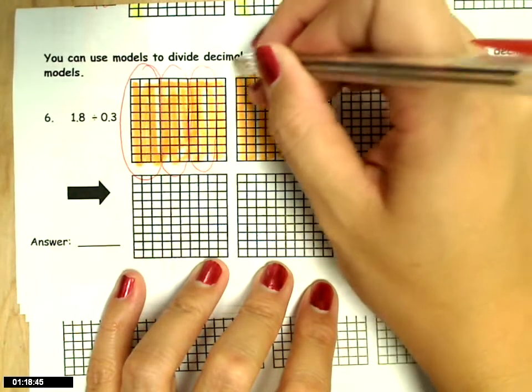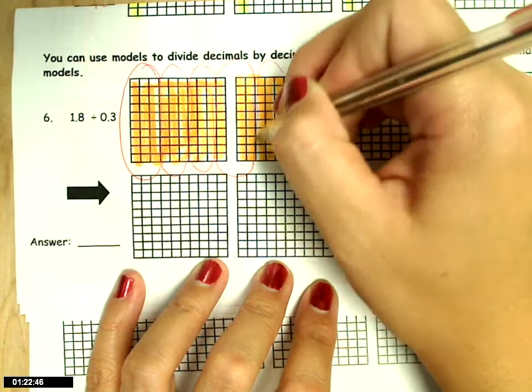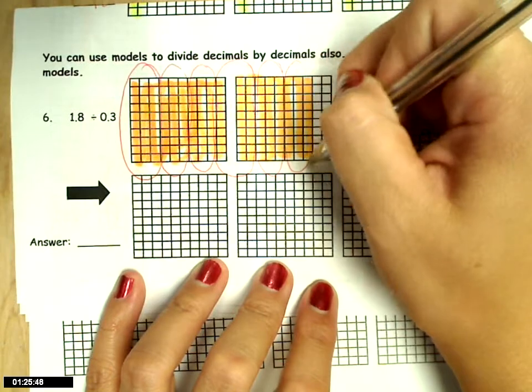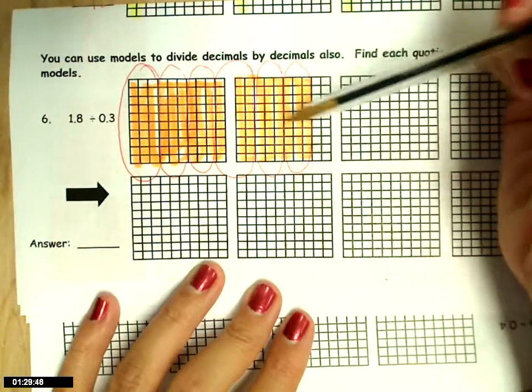This is 1, 2, 3. 1, 2, 3. And 1, 2, 3. So my answer now becomes 1, 2, 3, 4, 5, 6.